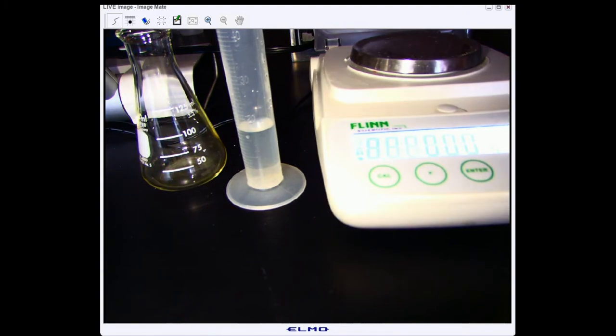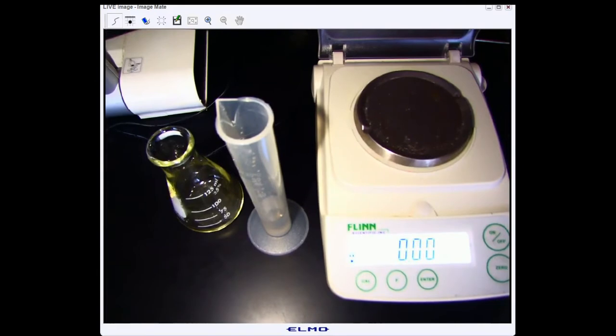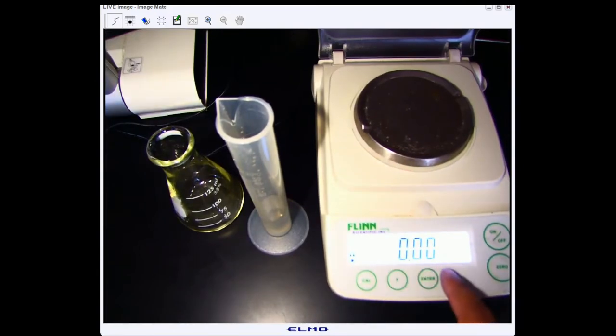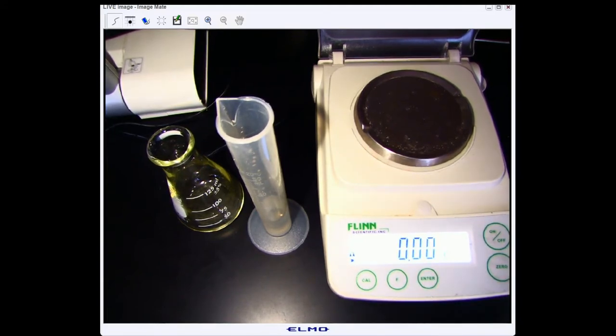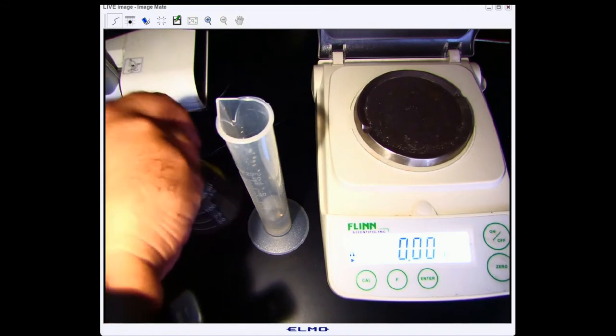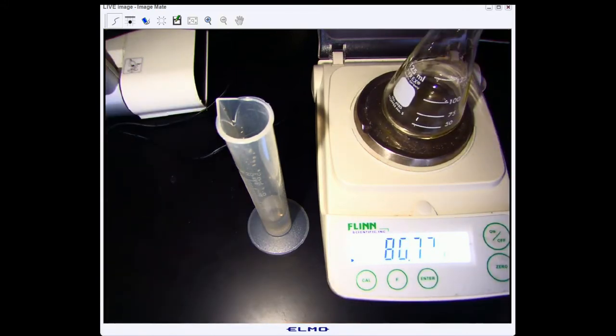What we're going to do is make sure that our scale is displaying all zeros. If it wasn't, we would press the zero button to make sure it does. Then we're going to get the mass of our empty flask here and we'll record it in our data table.